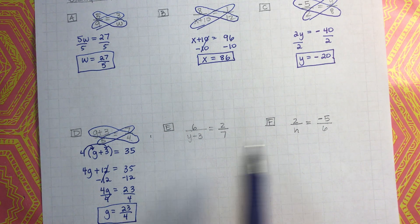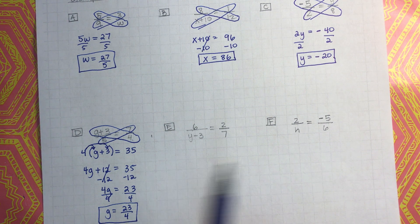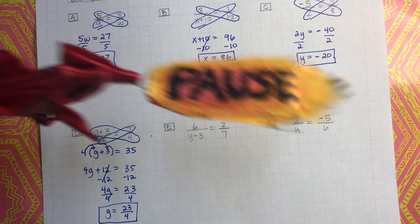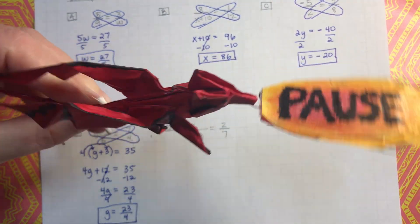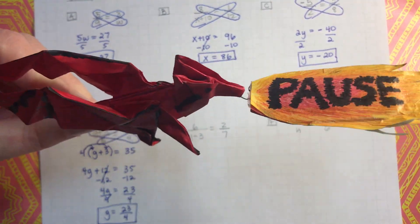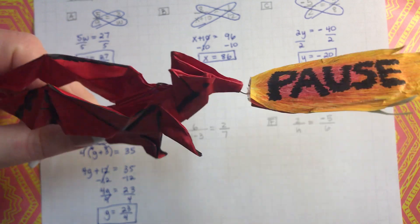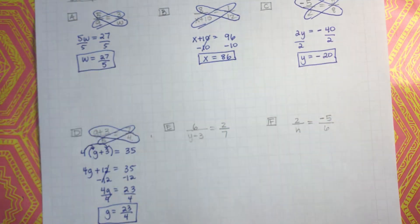I want you to do E and F on your own — only E and F, do not go forward. Go ahead and pause, work out E and F. When you get done, press play and we'll talk about them together.